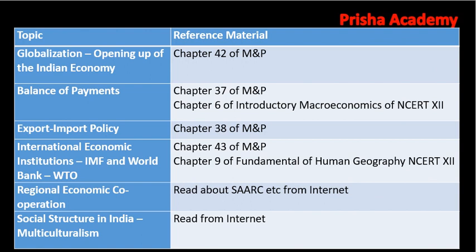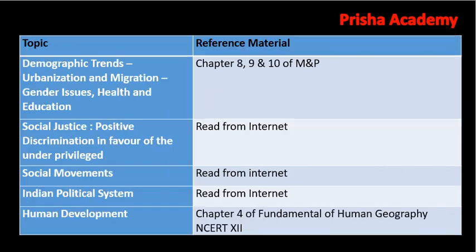Almost all the topics are covered in these three books except two or three topics which you can read from the internet, as buying a separate book for them would not be helpful. For Indian political system, you should know about democracy, the Indian party system, and the functions of Lok Sabha and Rajya Sabha — most of us have read these during school days. For social justice topics, read from the internet for the latest developments. Questions on these topics are generally easy if you read newspapers regularly.